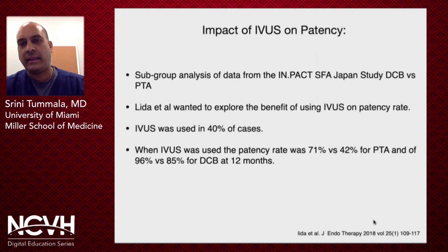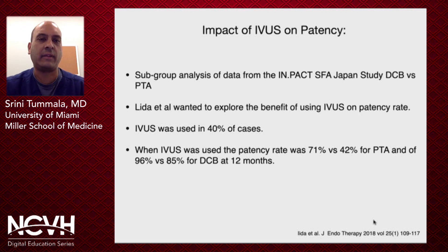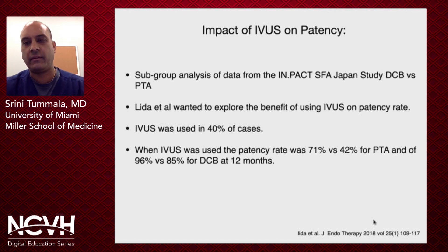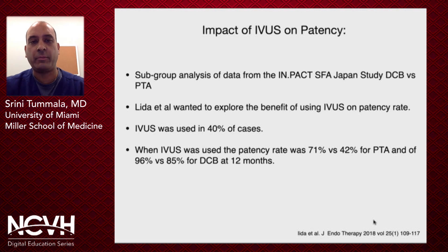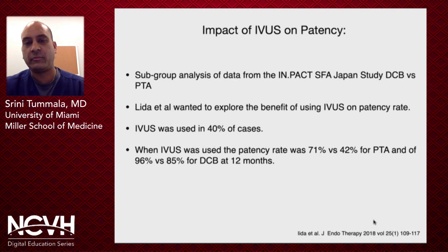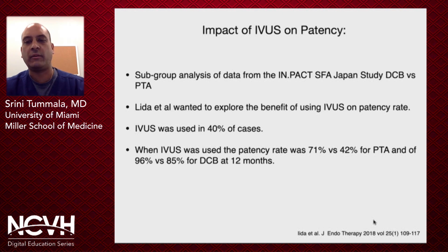A subgroup analysis of the IMPACT data comparing DCB versus angioplasty — Lita et al. explored the benefit of using IVUS on patency rate. IVUS was used in about 40 percent of cases, and when IVUS was used the patency rate was significantly better: 71 percent versus 42 percent for angioplasty and 96 versus 85 percent for DCB at 12 months. So it made a significant difference.